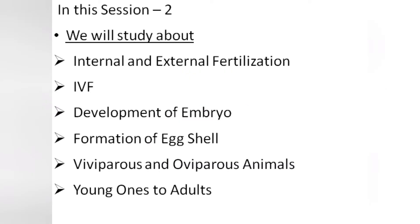In the second session of Chapter 9: Reproduction in Animals, we will study internal and external fertilization in detail, IVF meaning in vitro fertilization, also known as test tube babies, development of embryo, formation of egg cells, viviparous and oviparous animals, and young ones to adults.